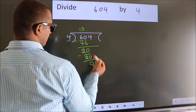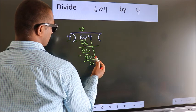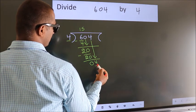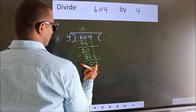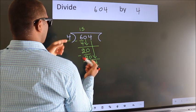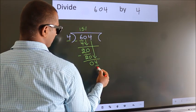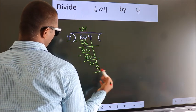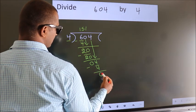After this, bring down the beside number. So, 4 down. So, 4. When do we get 4 in 4 table? 4 once, 4. Now we subtract. We get 0.